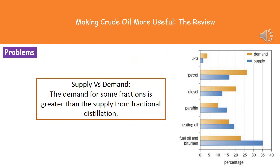Our next problem is the whole issue of supply versus demand. The actual demand for some of these fractions is much greater than the supply we get from fractional distillation. Looking at the graph on the right, it gives you the percentages of all those different fractions — the orange bar is the demand and the blue bar is the supply. We can see that the demand for LPG is greater than the actual supply, meaning we don't get enough LPG from fractional distillation to meet demands. The same can be said for petrol and diesel. However, for the lower fractions — paraffin, heating oil, fuel oil, and bitumen — we've got a greater supply than demand.